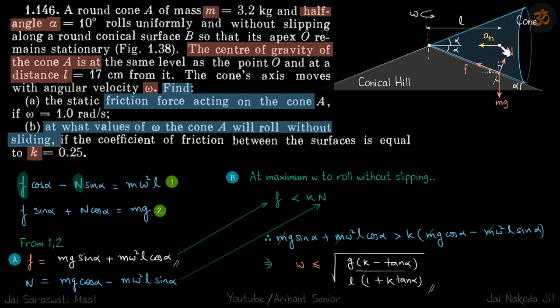So the net force in horizontal direction we can write as M a_n where a_n is omega square L. And vertically the center of mass is not moving, so vertical forces should be balanced.